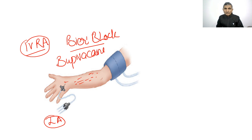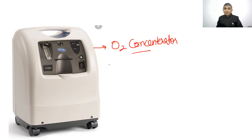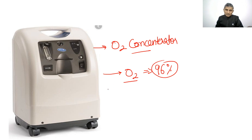The next image is of an oxygen concentrator. As the name suggests, this instrument concentrates oxygen from the environment. It sucks air from the environment, nitrogen is adsorbed, and oxygen is given. The maximum oxygen that can be given by this equipment is 96%. It cannot give 100% oxygen. It is used where oxygen cylinders or piped oxygen supply is not available, so it can be used at home.